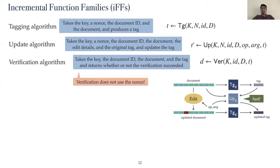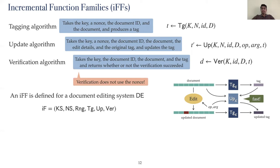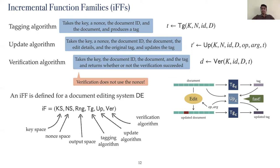Note that the verification algorithm does not take a nonce — that is, verifying if the tag is valid does not require knowledge of the nonce used for tagging. An incremental function family is defined for a specific document editing system. It is a tuple which contains the key space, the nonce space, and output space, which are sets of allowed keys, allowed nonces, and allowed tags respectively. The tagging algorithm, update algorithm, and verification algorithm are also in the tuple.